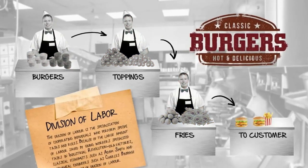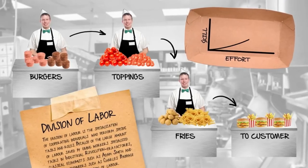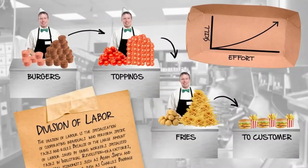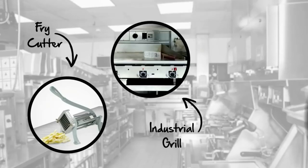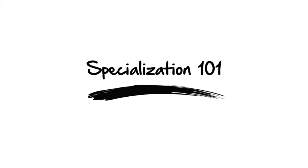No more lost time switching between tasks. As a worker concentrates his effort, he gets better at doing the task at hand. But it's not just the specialization of workers that increases output — it's also the development of specialized tools that modern workers use. The burger joint has tools to slice potatoes, to cook burgers, and to fry the fries. That's just specialization 101.